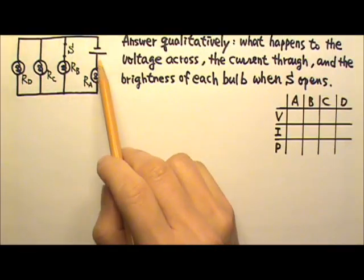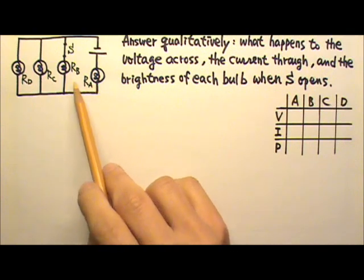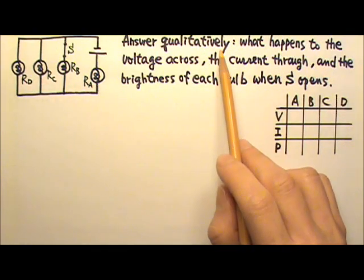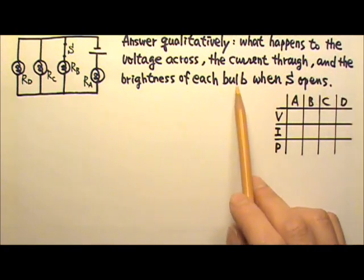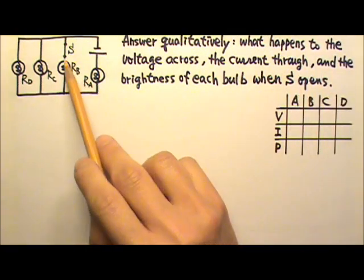Here we have a circuit with a power supply and four light bulbs, A, B, C, D. Answer qualitatively what happens to the voltage across, the current through, and the brightness of each bulb when the switch S opens.